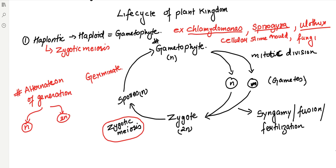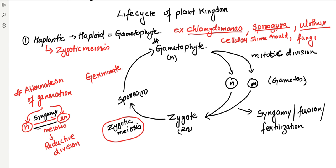A common question asks which mechanisms are important for alternation of generation. To go from haploid to diploid, you need syngamy — you fuse two haploid cells. To go from diploid back to haploid, you need meiosis, also known as reductive division or reduction division. So alteration of generation requires two important processes: syngamy and reductive division, also called meiosis.